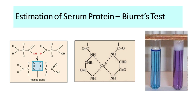Estimation of serum protein is done by the Biuret test. Proteins are made up of amino acids joined together by peptide bonds — the H and OH groups react and come out as water, forming the peptide bond. The unique property of this peptide bond is that in alkaline pH it reacts with copper ions to form a colored substance. This is a copper sulfate solution in alkaline pH, and when we add proteins the color changes from blue to violet. This reaction is called the Biuret test.